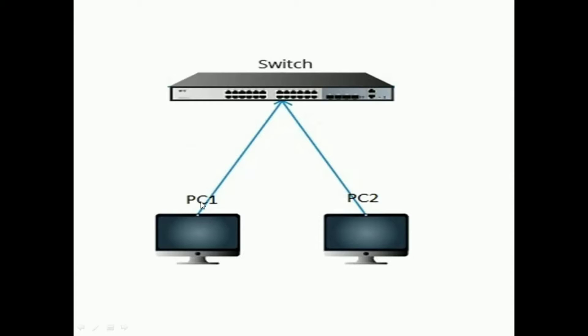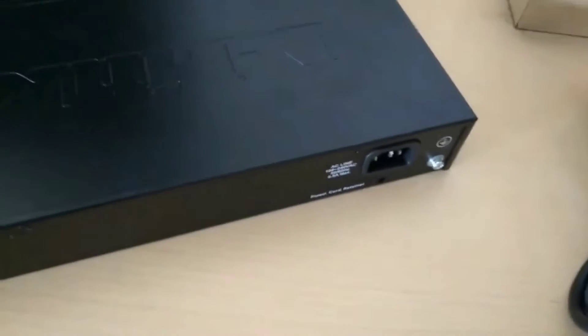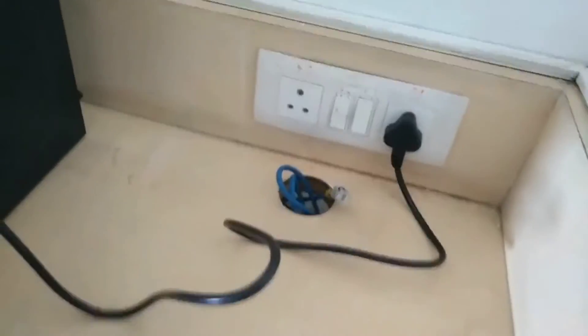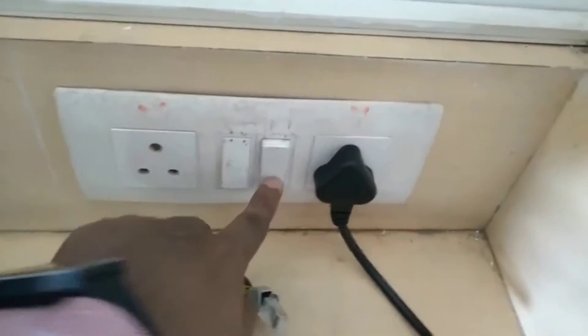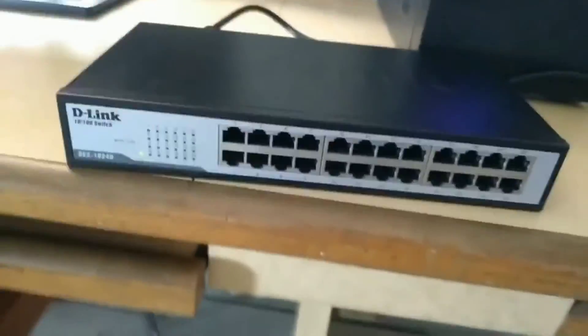This is how we are going to form a physical LAN with two PCs connected to each other through the switch and twisted pair cables, forming a star topology. Let's connect the power cord to the switch and connect the other end to the main supply. When we turn the main supply on, all LEDs will glow for a few seconds and then turn off.